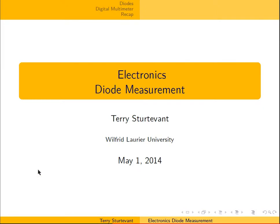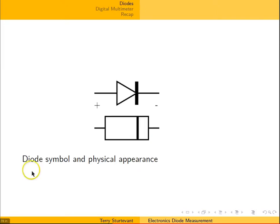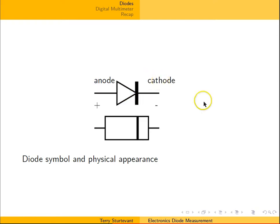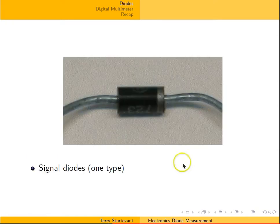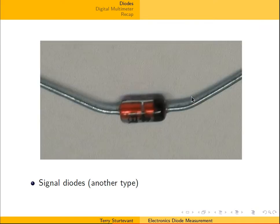This document is about how to use diode measurements. Here's the circuit symbol for a diode and its physical appearance. This side is the anode and this is the cathode. Here's one type of signal diode where you can see the anode and the cathode. Here's another type of signal diode; again you can distinguish the anode and the cathode.